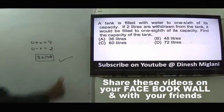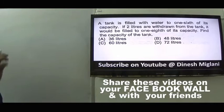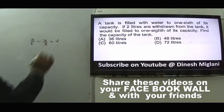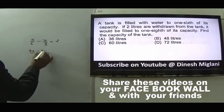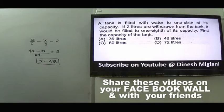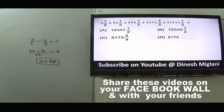Question 9: A tank is filled to 1/6 of capacity. If 2 liters are drawn, it falls to 1/8 of capacity. Let total capacity = X. Then X/6 - X/8 = 2. Taking LCM 24: (4X - 3X)/24 = 2, so X = 48 liters. Answer is B.